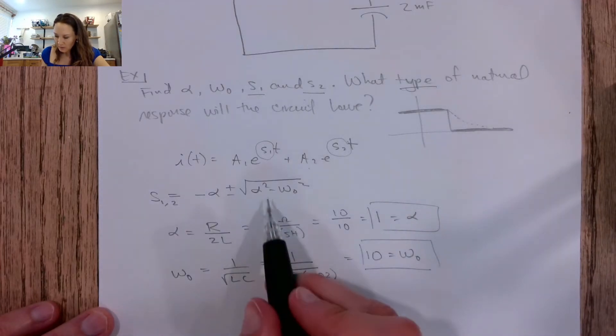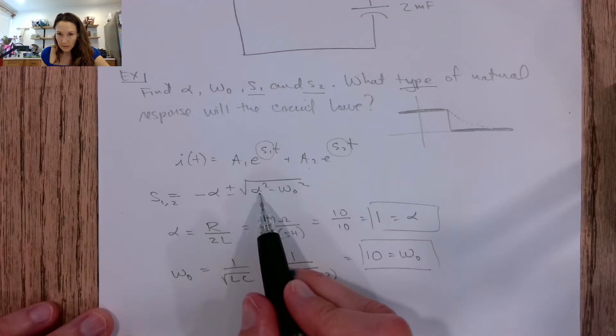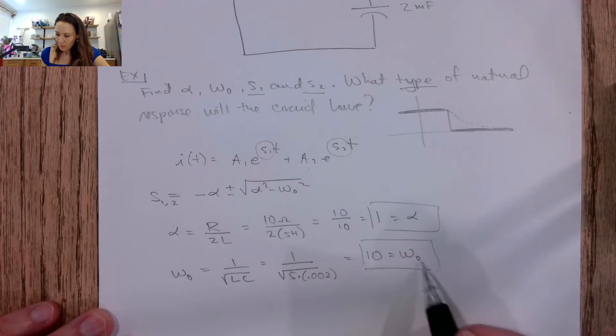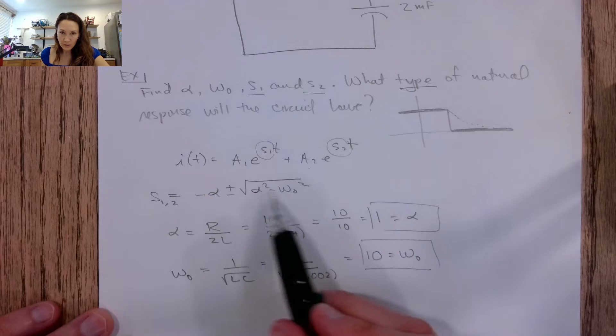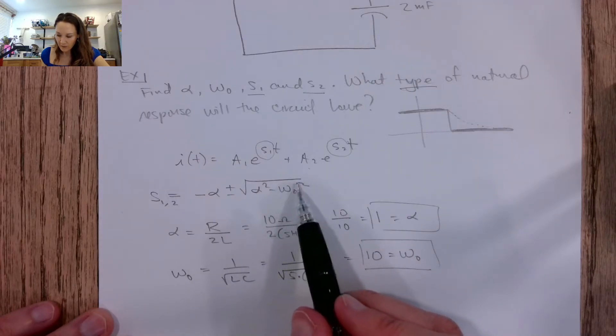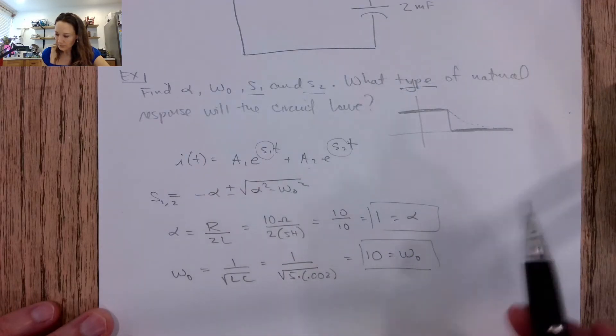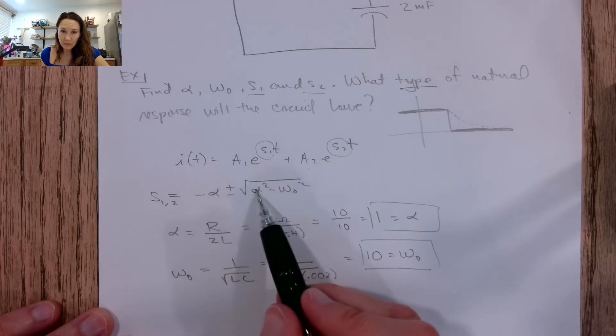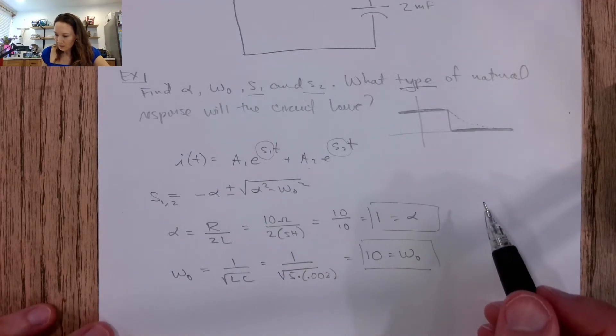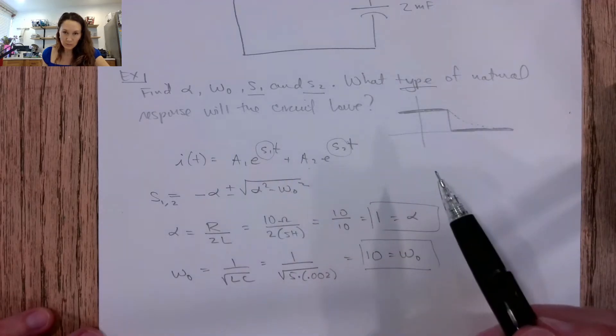So depending on which one is bigger, basically, if alpha is bigger, then that means that this quantity will be larger than this one, and we'll have a positive underneath the radical. If omega naught is bigger, that means that we will have the negative quantity is bigger underneath the radical, so we'll have a complex result. If they're equal to each other, then we'll have two repeated roots, because we'll have a zero underneath the radical, and we'll have negative alpha plus zero and negative alpha minus zero. So those are what mathematically define our three dampening cases, and that's the type of natural response the circuit will have.